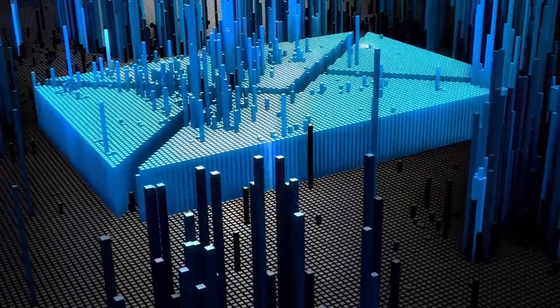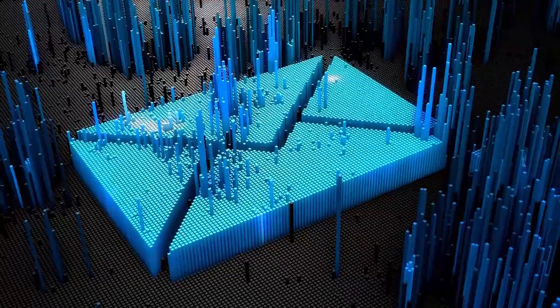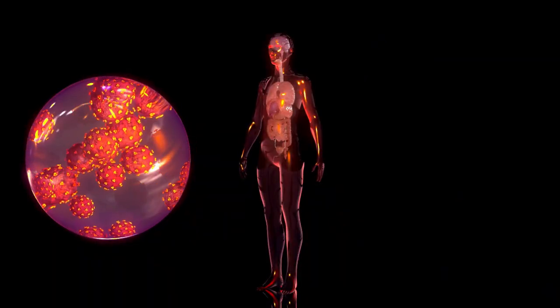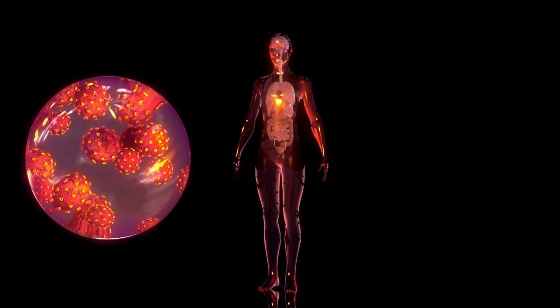The observable universe is the part of the universe that we can actually see and study using telescopes and other scientific tools. This part includes everything from nearby stars and planets to the farthest galaxies we can detect.